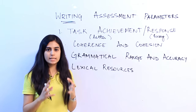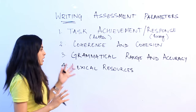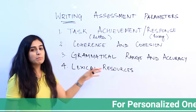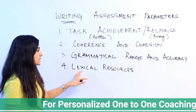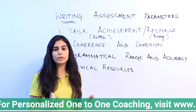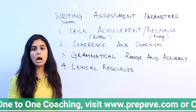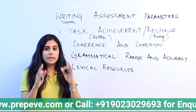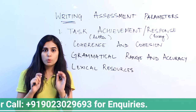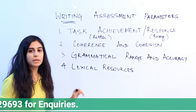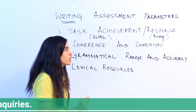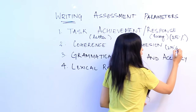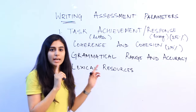How coherent is your essay or letter? How connected is it? Third is grammatical range and accuracy — your grammar has to be in the right place. Fourth is lexical resources — basically your vocabulary. How good and how wide is your range of vocabulary? One thing of utmost importance is that each of these parameters carries the same weightage — each is 25%. So you cannot dare to ignore any one of them.